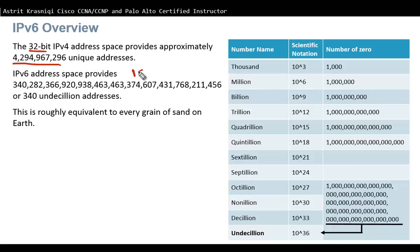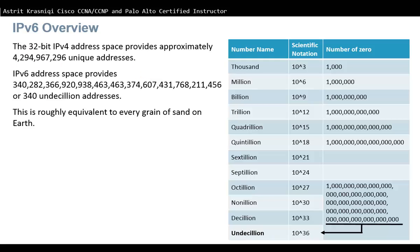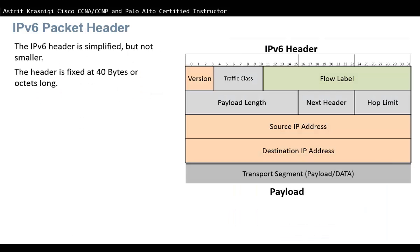In IPv6 with 128-bit addresses, we can have over 340 undecillion addresses. One undecillion has 36 zeros, so this is roughly equivalent to every grain of sand on Earth — that gives you an idea of how many IPv6 addresses are available.